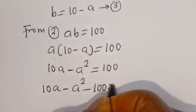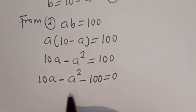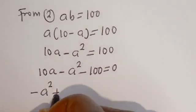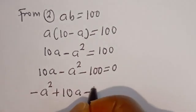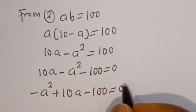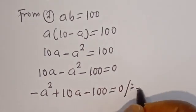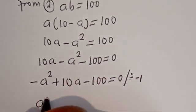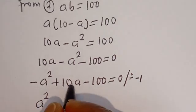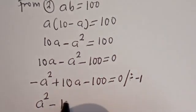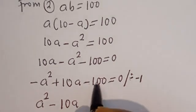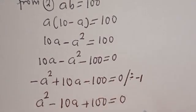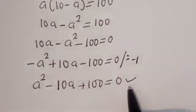We have 10a minus a squared equals 100. Bringing 100 to the other side gives minus a squared plus 10a minus 100 equals zero. Dividing all through by minus 1 gives a squared minus 10a plus 100 equals zero. This is a quadratic equation.